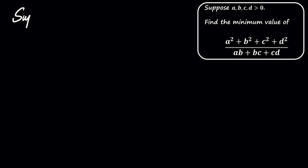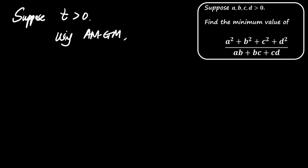To solve this, we'll introduce a positive parameter t, which is greater than zero, and apply the Arithmetic Mean Geometric Mean Inequality, or AM-GM Inequality for short. Using AM-GM, we can write three inequalities as follows.